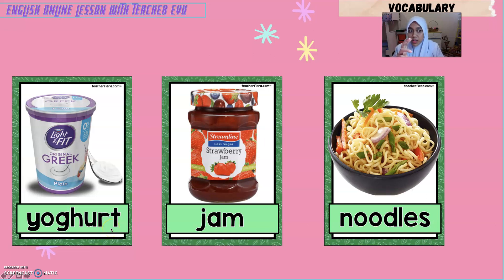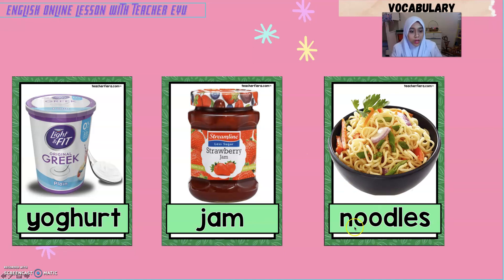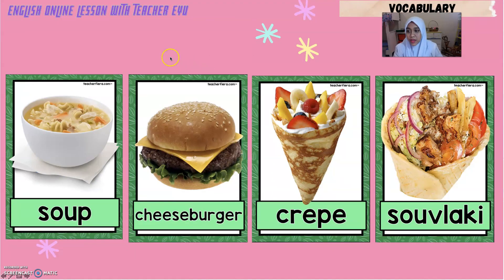Yogurt — in Malay we also say yogurt, the one we eat, right? Next: 'jam.' Okay, jam — this is an example of jam. There are lots of jams: strawberry jams, orange jams. In Malay we also say jam. Next: 'noodles.' Noodles — in Malay it means 'mee,' okay.